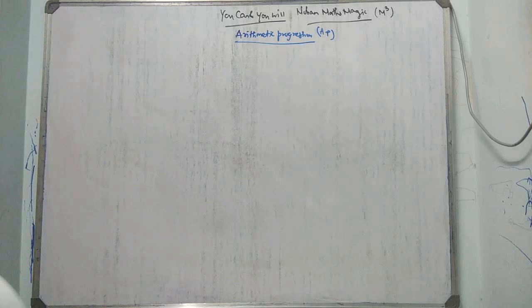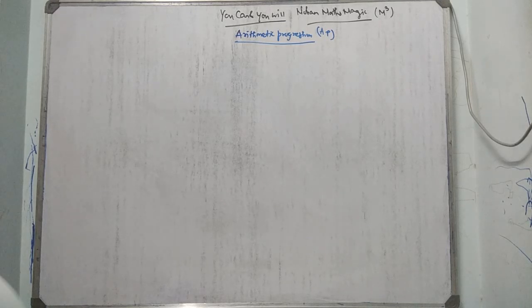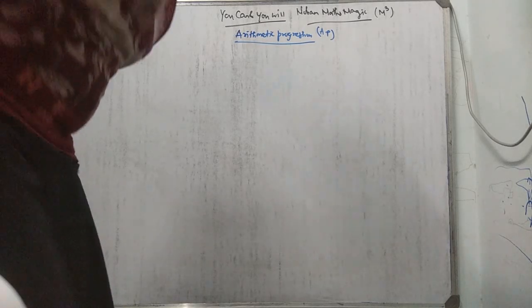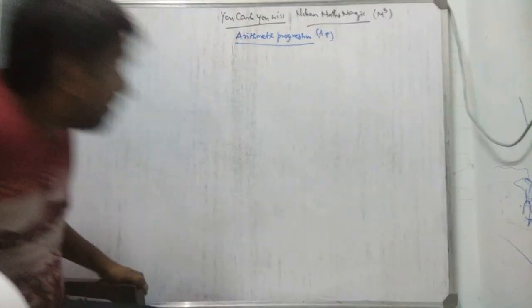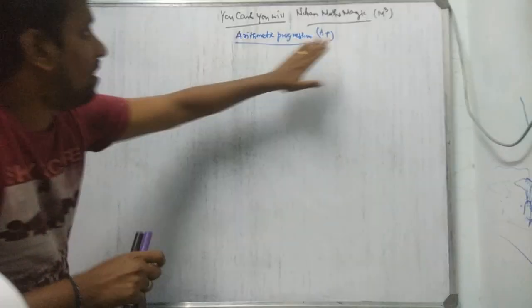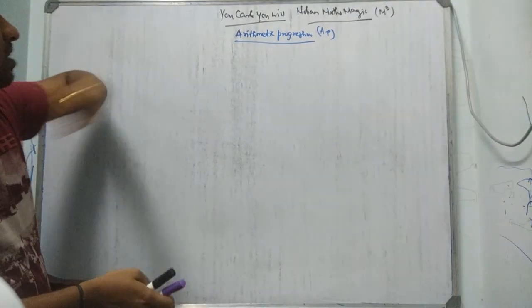Good evening dear students, Class 10. The quadratic equation chapter is completed, the next chapter is arithmetic progression. Arithmetic progression, the shortcut is AP. AP — arithmetic progression.